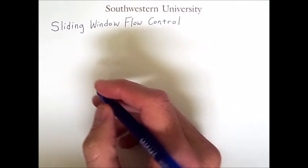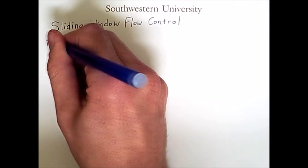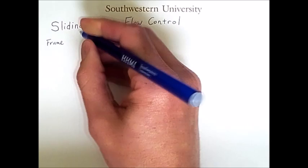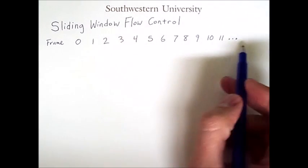So let's say we want to send several frames. We'll list out a number for each frame starting at zero. The list goes on forever.